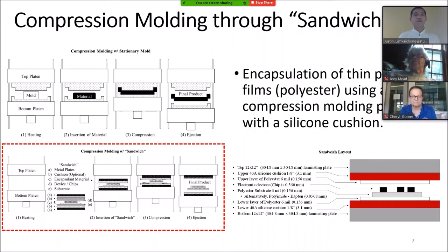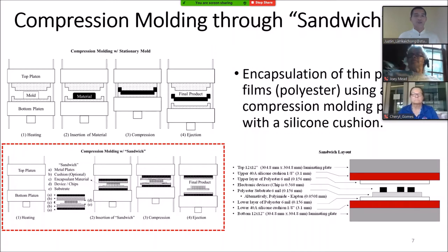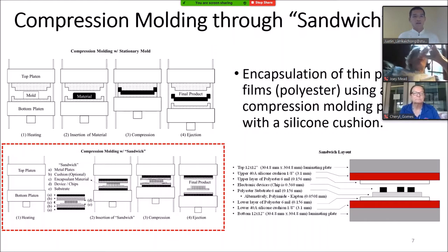We achieve thin film polymer encapsulation through compression molding. My colleagues at UMass Lowell also did spray and die coating, but Professor Kazmier and I focused on compression molding. Compression molding is typically a common process for thermosets and thermoplastics, and involves four steps. First, you heat your platens to a certain temperature. In a normal compression molding process you have a mold, but in our case we use a sandwich composed of laminating plates made of aluminum, rubber silicone cushions to reduce compression forces on the chips, plus the encapsulant layer and flexible electronic device. Then you have compression, lamination, and ejection.